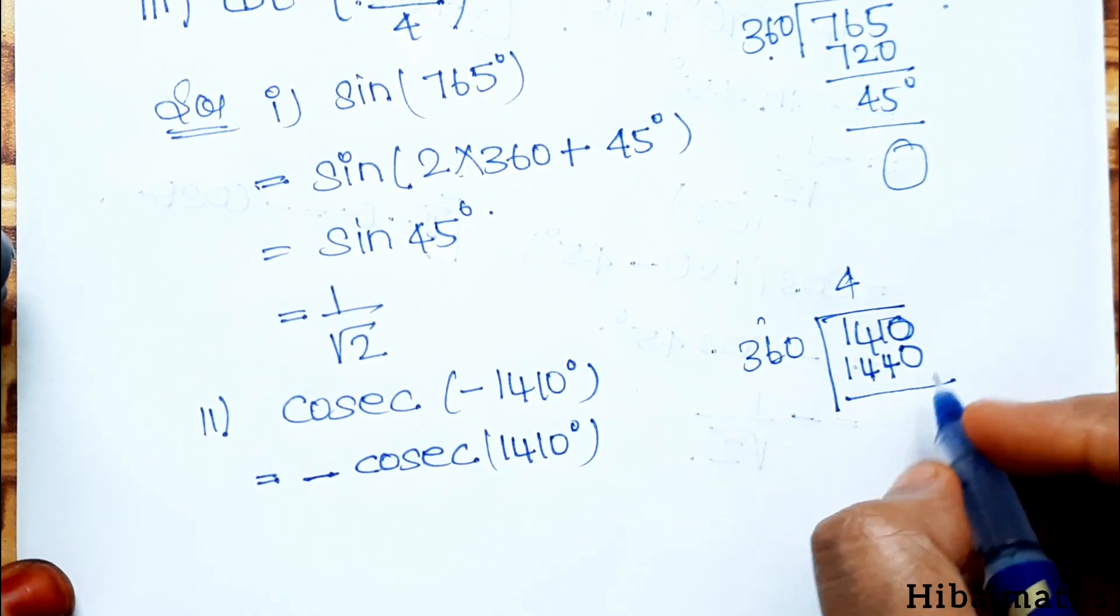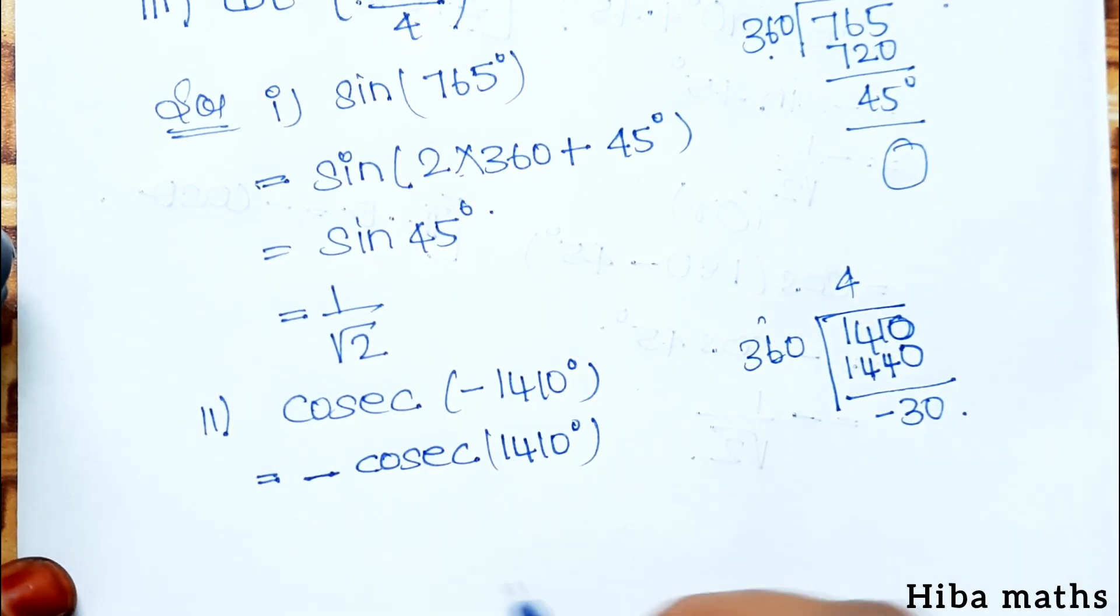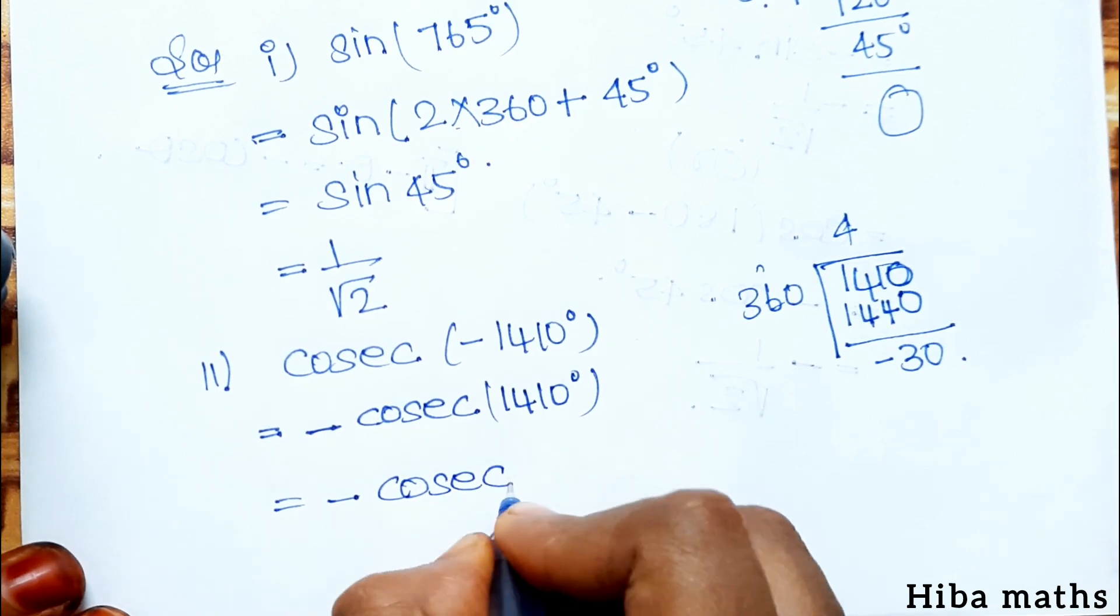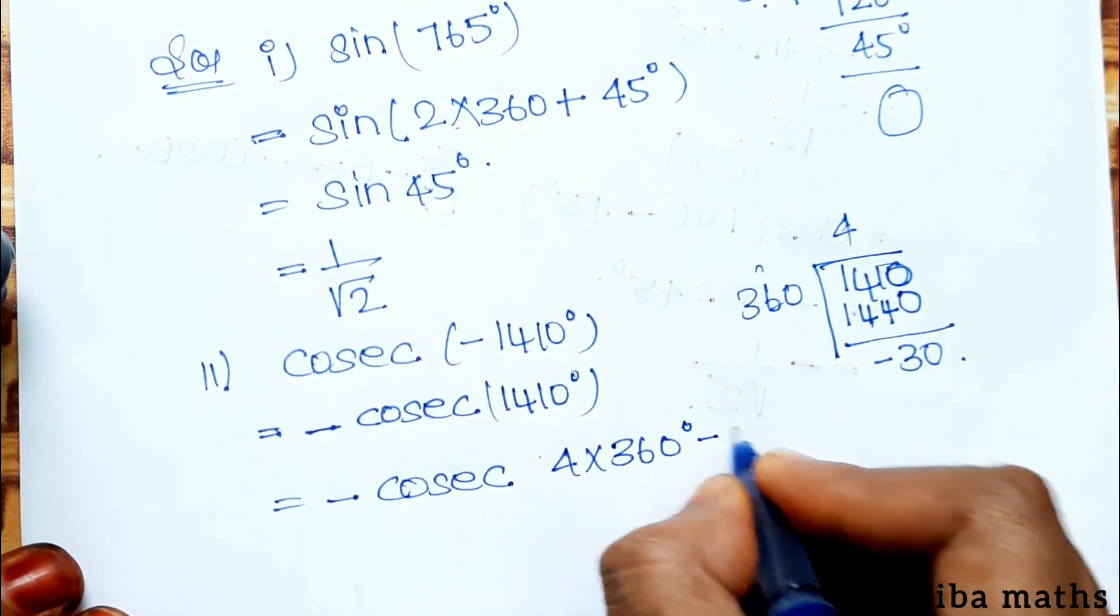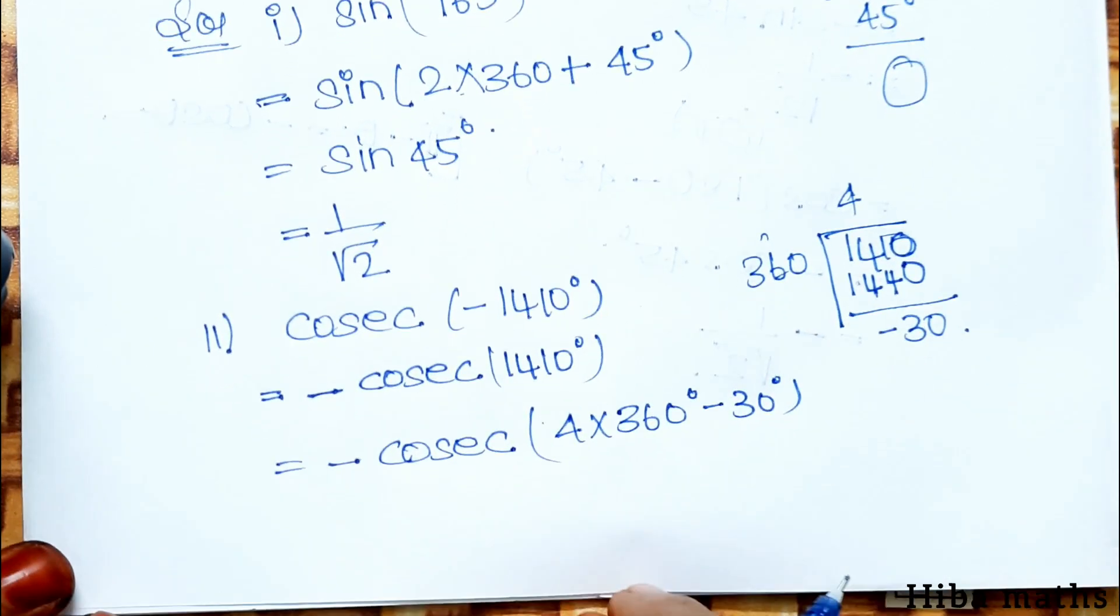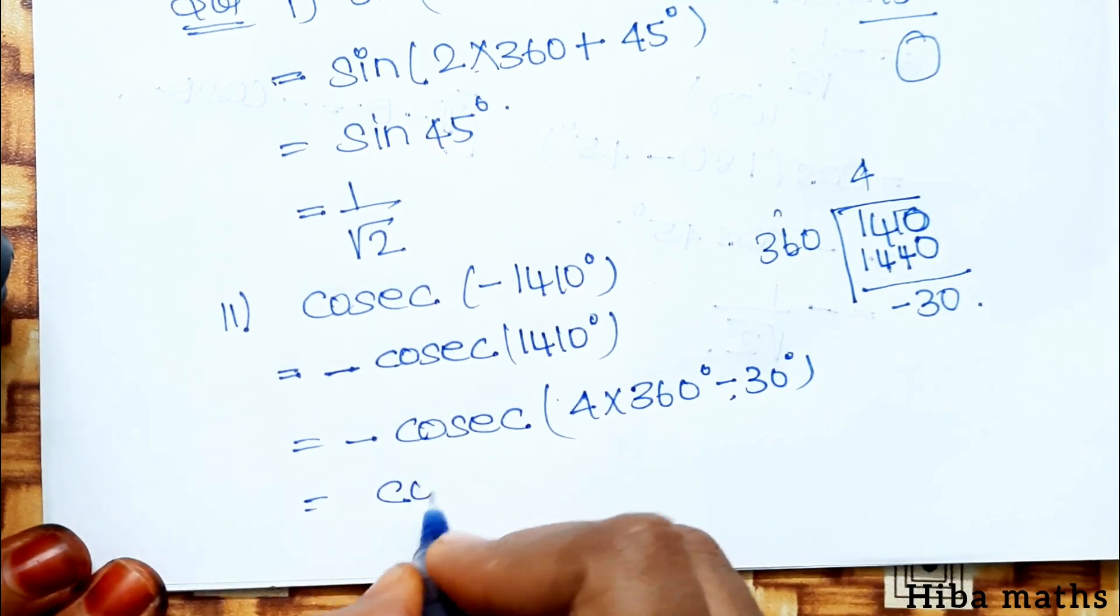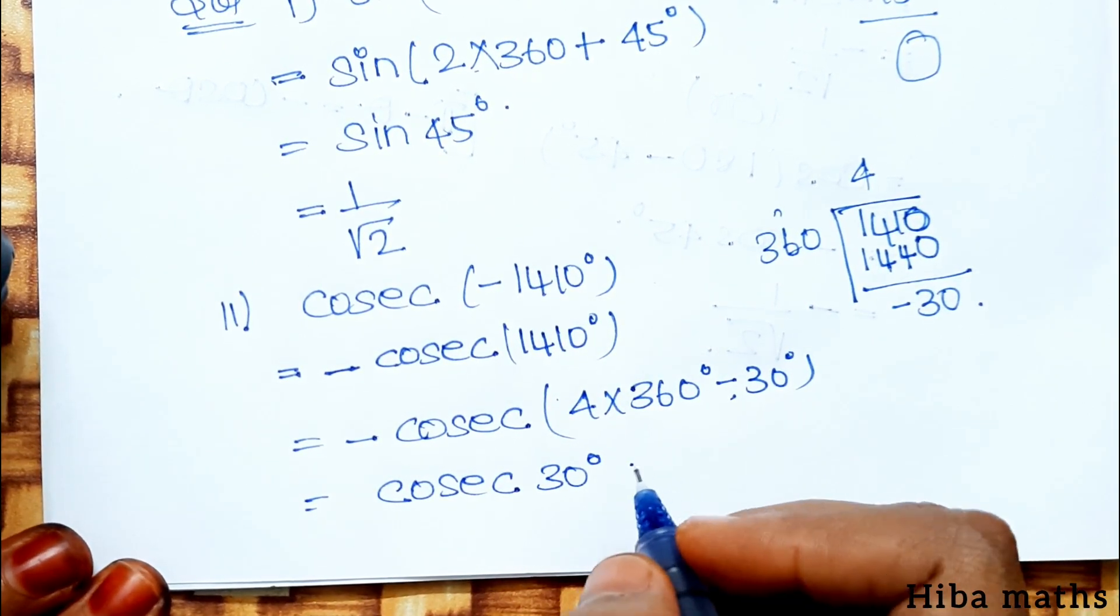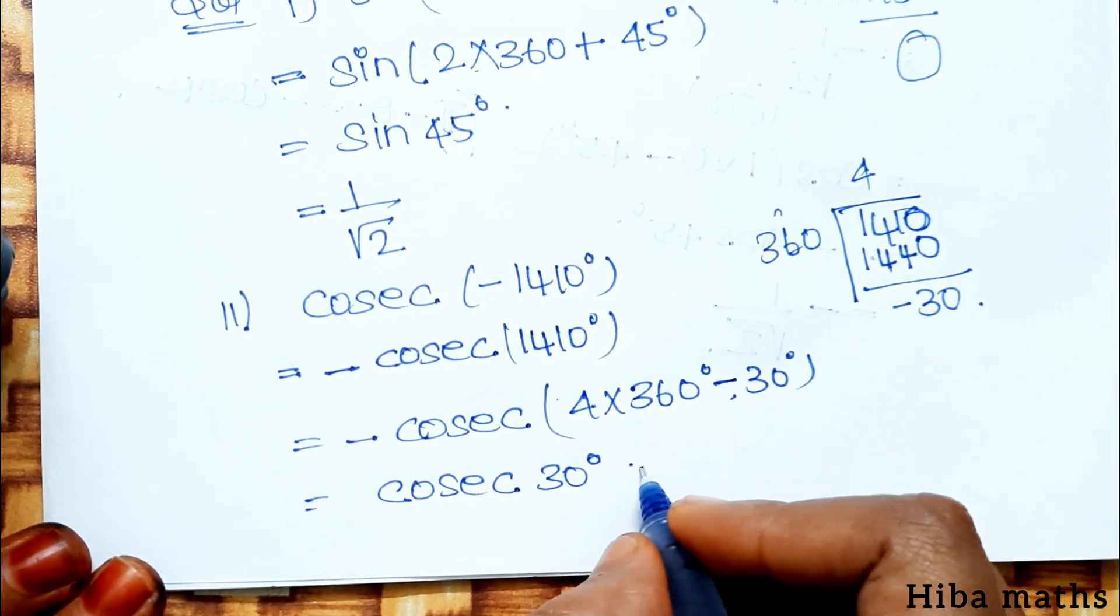So we get minus cosec of 4 times 360 minus 30 degree. The 360 cancels, and minus minus gives plus, so we get cosec 30 degree.